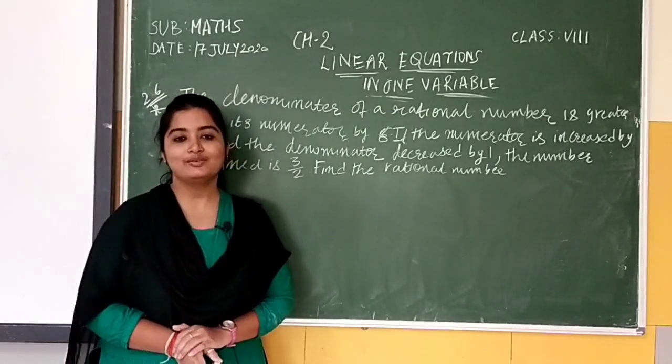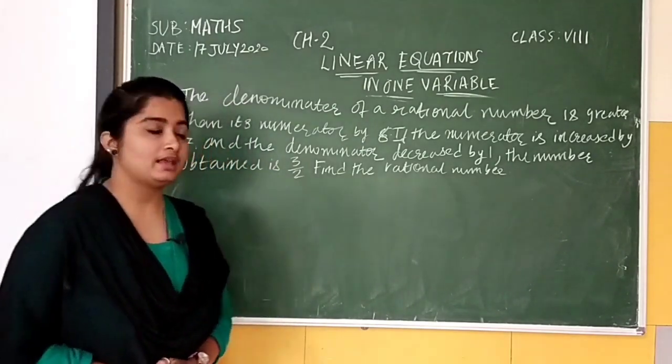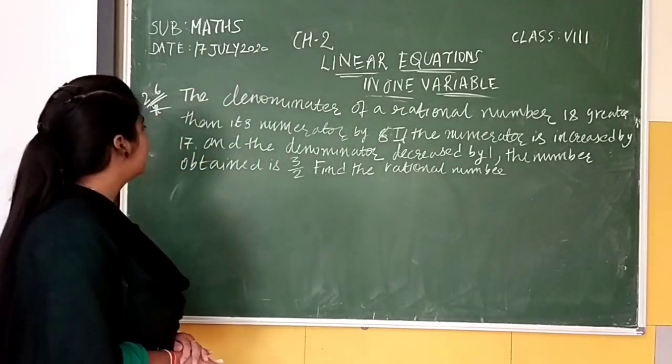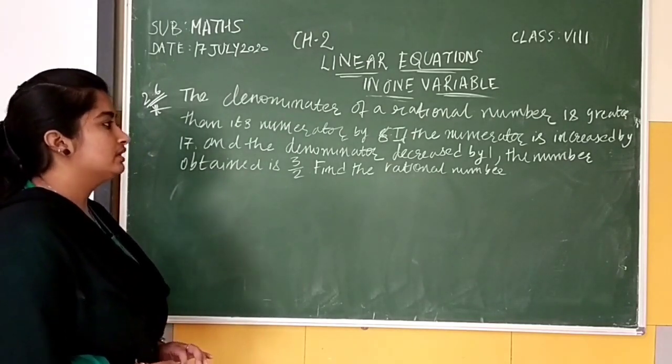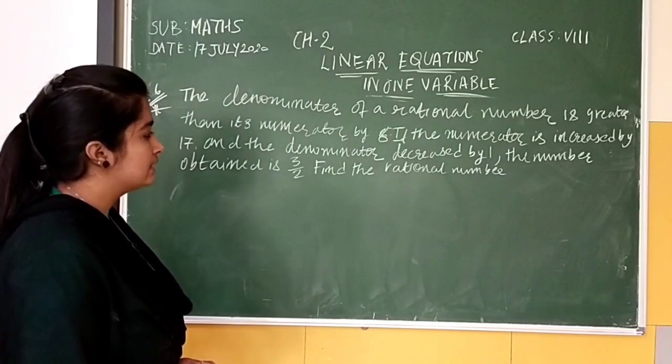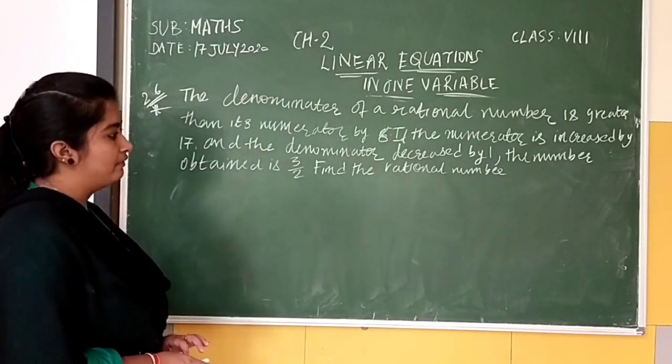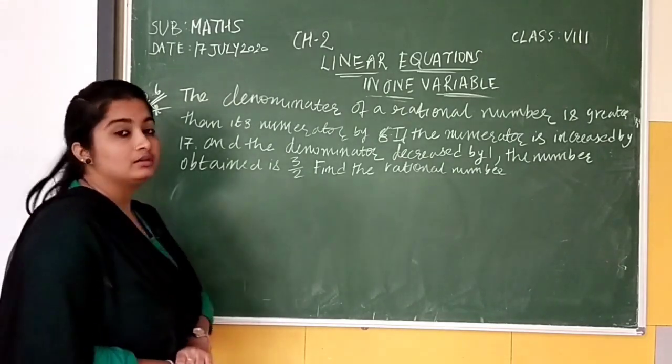Hello students, here we have sum of exercise 2.6. The sum says that the denominator of a rational number is greater than its numerator by 8. If the numerator is increasing by 17 and the denominator is decreasing by 1, the number obtained is 3 by 2. Find the rational number.